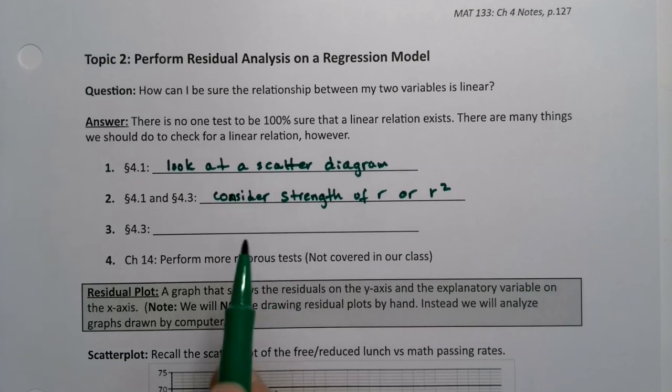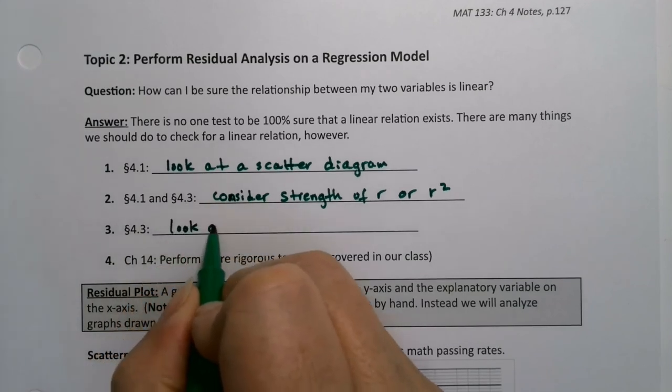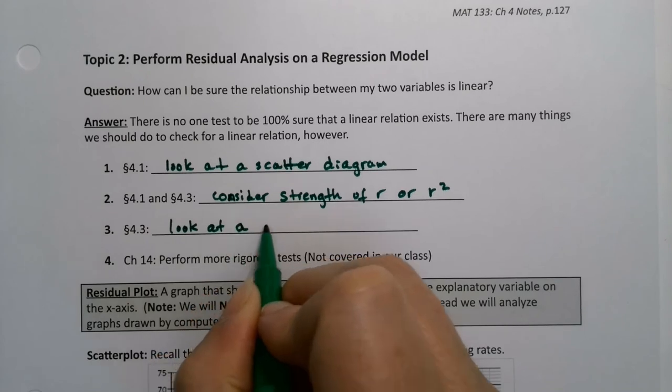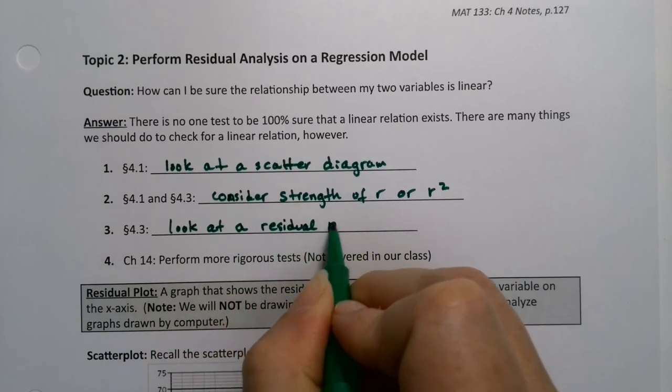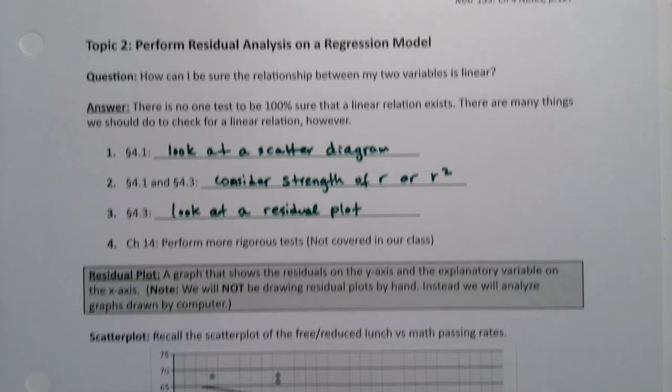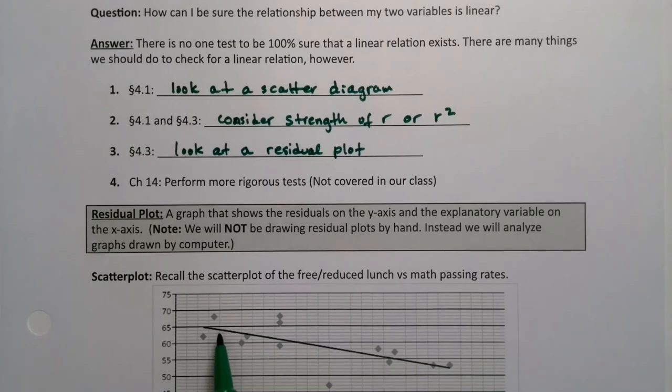And in this section, we're going to look at a residual plot. Now remember, we've seen residuals. Residuals are the errors of each point away from the line, how far vertically these points are from that line. And then we're going to make a plot of them.